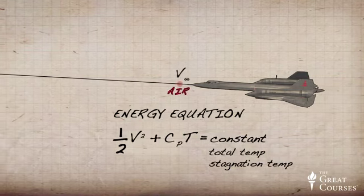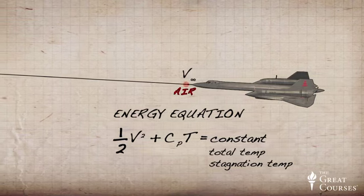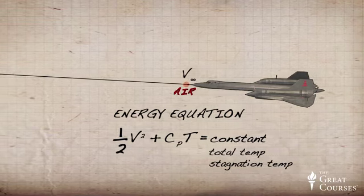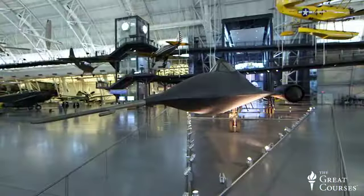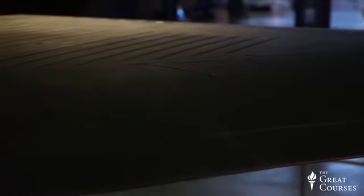Thus, when the flow reaches the leading edge and completely stagnates, the temperature reaches the stagnation temperature, which can be quite hot. This is actually a limiting factor for high-speed flight. High-speed aircraft such as the SR-71 Blackbird had to be made from special materials in order to sustain the high heat loading on the leading edges due to the high stagnation temperatures associated with high-speed flight.